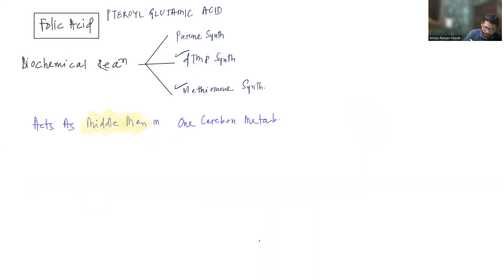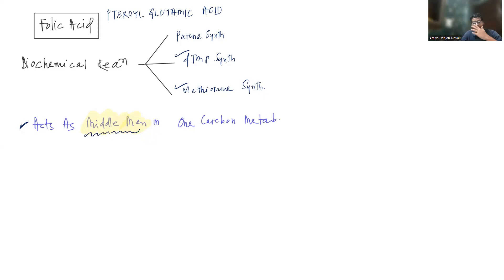Folic acid acts as a middleman for one-carbon metabolism. In one-carbon metabolism, it can take up a methyl group from a donor and provide the methyl group to another compound. In this process, it helps in various methylation reactions — that is why folic acid is known as the middleman, providing one-carbon or methyl groups.